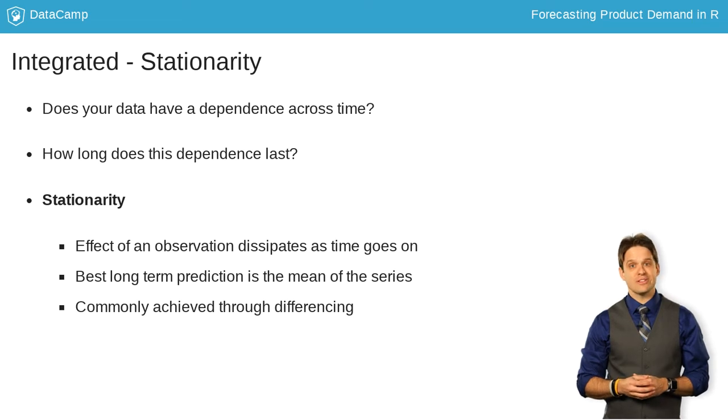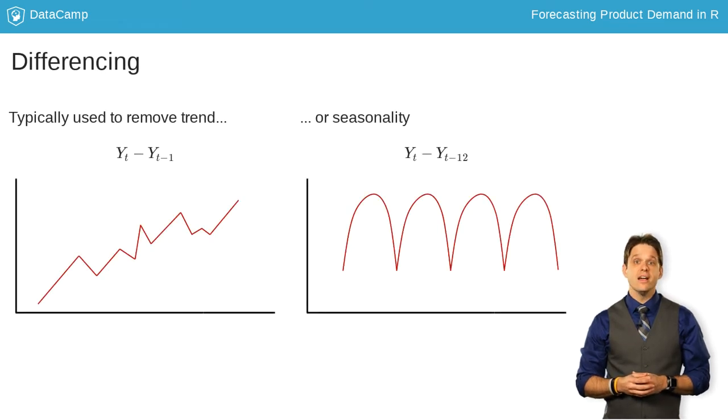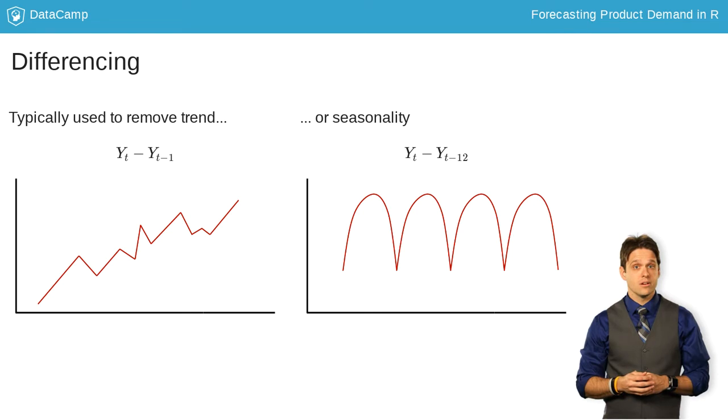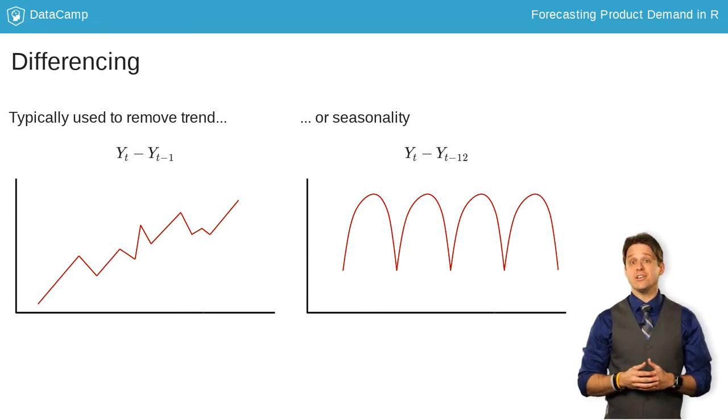How do we make our data have stationarity? Typically, through differencing. Differencing your data means looking at the change from one time period to another, or the difference between them. This can solve trending data sets with a single time period difference. It can also solve seasonal effects with seasonal differences. For example, monthly sales data might have an annual or 12-period seasonal wave.